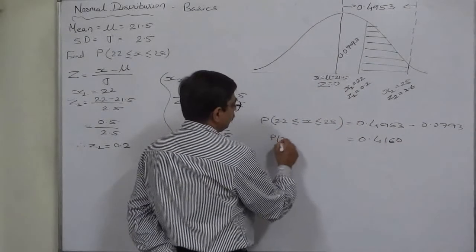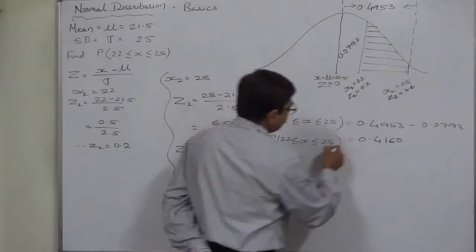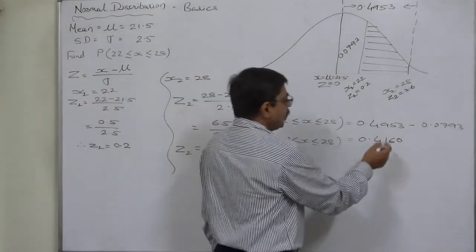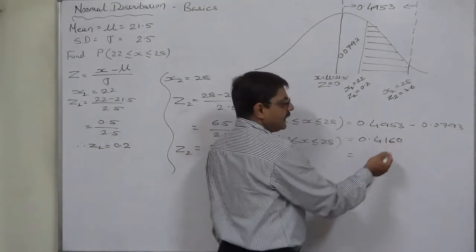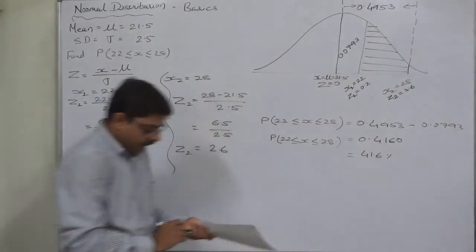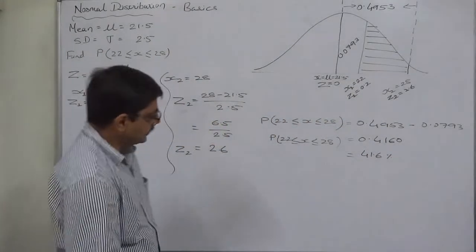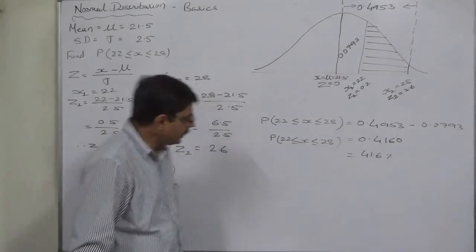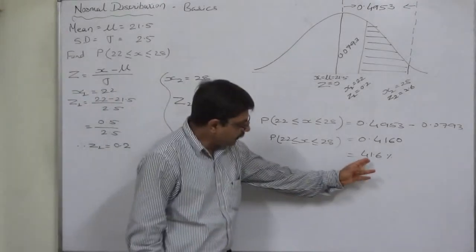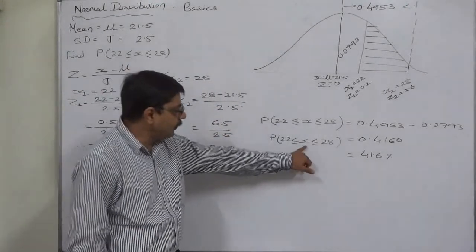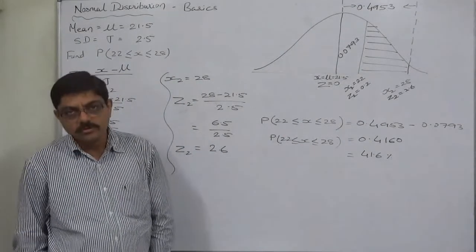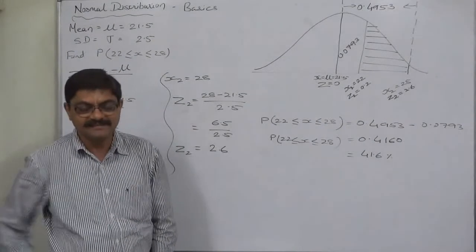The probability that variable x takes a value between 22 and 28 comes to 0.416. Multiplying by 100 gives the percentage: there are 41.6% chances that the variable x takes a value between 22 and 28, or 41.6% of the values of variable x are between 22 and 28 inclusive. That's it — thank you very much.